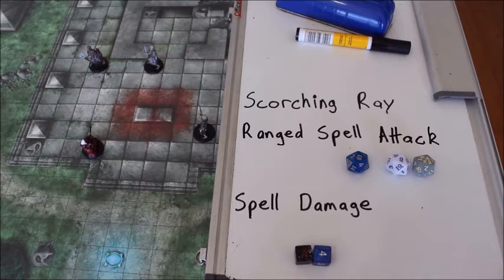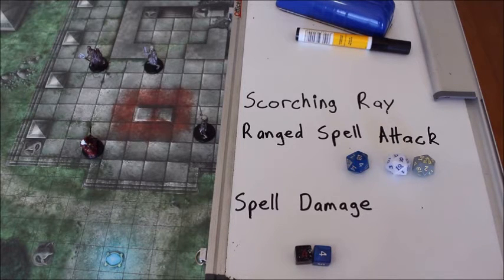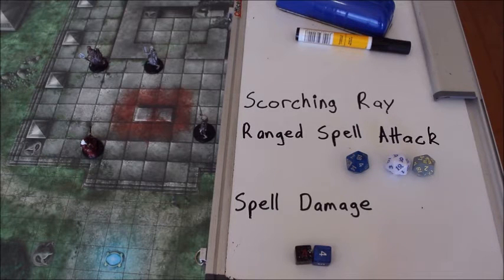You can hurl these rays at one target or at several targets. You make a ranged spell attack for every single ray that you fire, and on a hit the target takes 2d6 fire damage. A lot of people have been rolling the damage once, but you have to roll damage for every single ray.